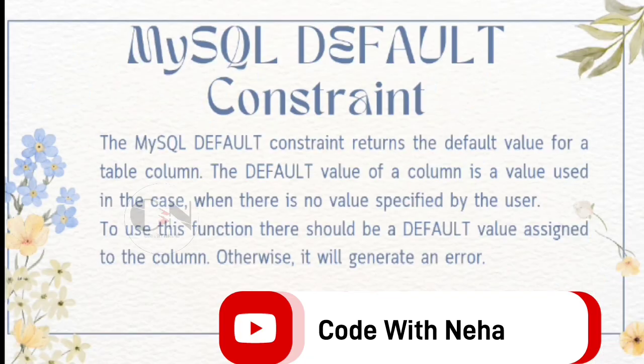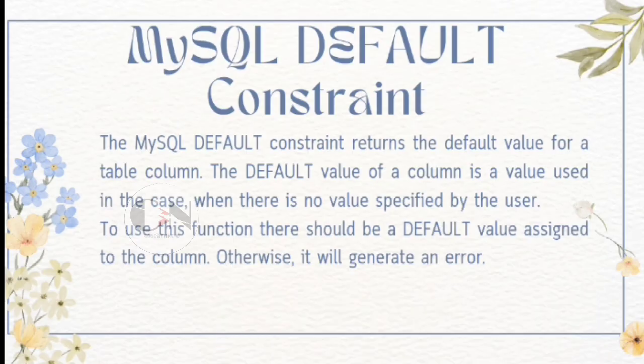MySQL default constraint returns the default value for a table column. The default value of a column is a value used in the case when there is no value specified by the user. To use this function, there should be a default value assigned to the column. Otherwise, it will generate an error.